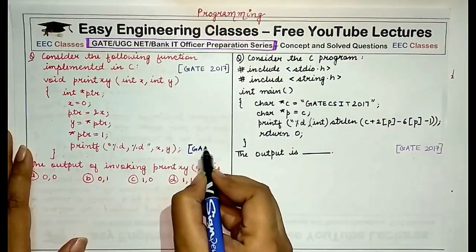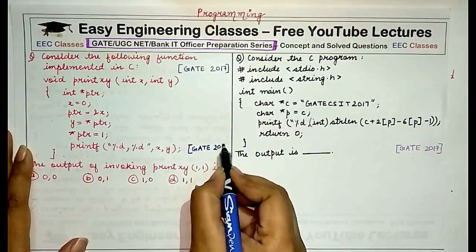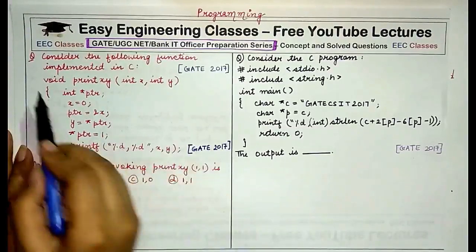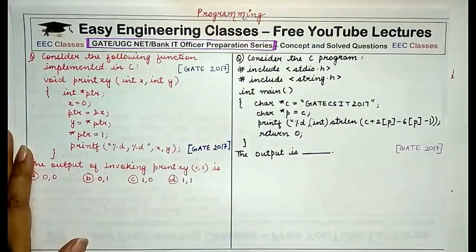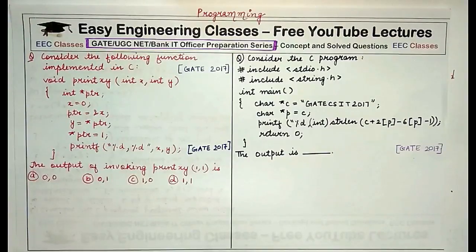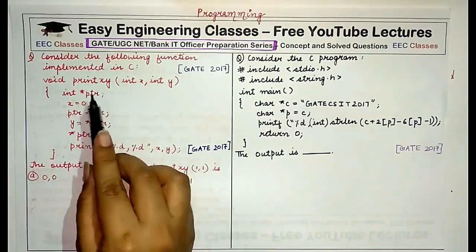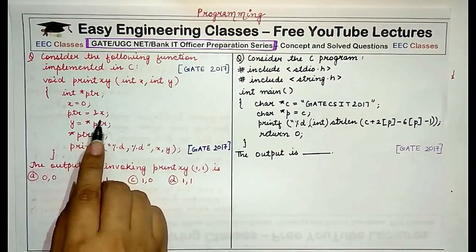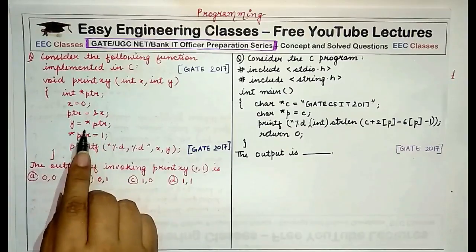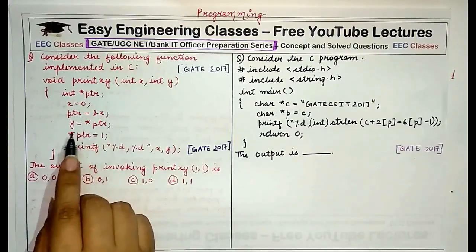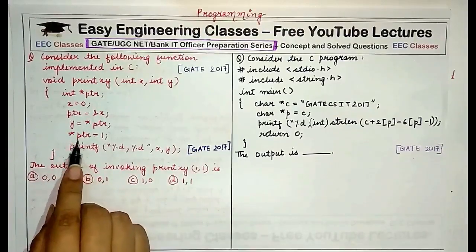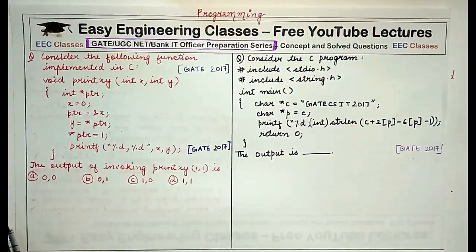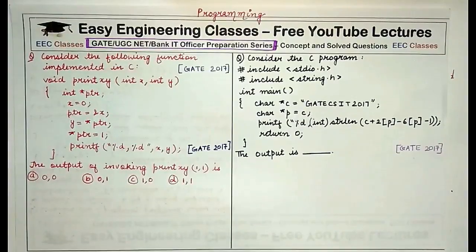These questions appeared in GATE 2017. The first question reads: consider the following function implemented in C — void print(x, y), where int x and y are parameters. Inside we declare a pointer, assign x to 0, assign the pointer the address of x, assign the value at the pointer to y, then change the data at the pointer to 1, and print x and y. We have to determine the output when this function is called with parameters x and y.